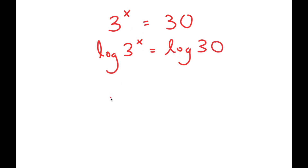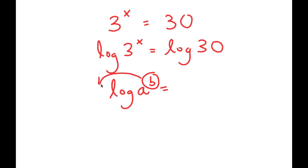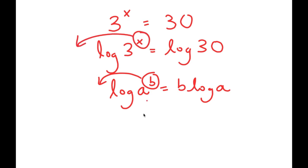If I have something in the form log a to the power of b, I can move b to the front, so this turns to b times log a. In this case, I have log 3 to the power of x, and I can move x to the front, so I get x times log 3 is equal to log 30.